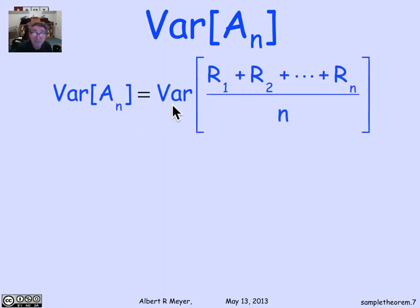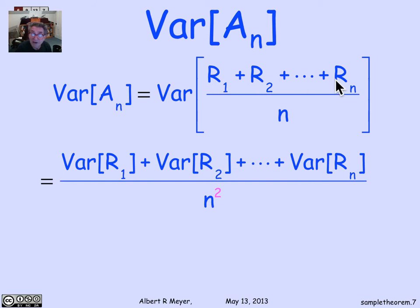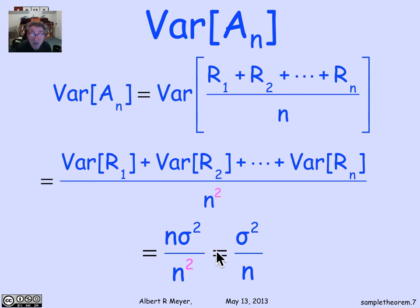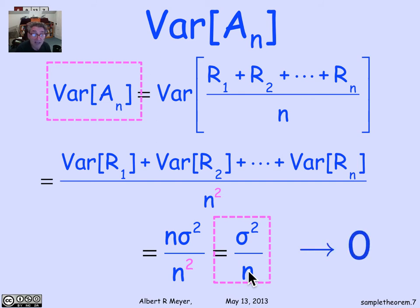Let's calculate the variance of a_n. a_n is the sum of the r's over n. Since we're assuming independence of the r's, the variance sum rule tells us this is the sum of the variances. When we factor out 1/n, that constant squares when pulled out of the variance, so the denominator becomes n squared — and that's critical. The numerator is the sum of the n variances; each variance is sigma squared and we've got n of them, giving n·sigma squared over n squared, which equals sigma squared over n. Since sigma squared is a constant and n goes to infinity, the right-hand side goes to 0, which concludes the weak law of large numbers.